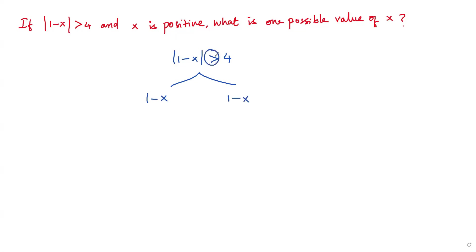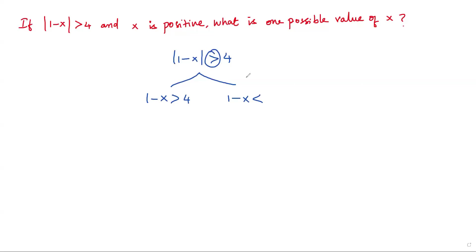In the first branch, I take the inequality sign and value as it is: greater than 4. In the second branch, I have to flip the inequality sign — it becomes less than — and change the sign of the number, so positive 4 becomes negative 4. Now I have to solve these two inequalities for x.